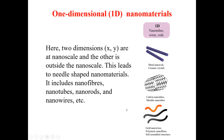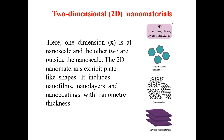Then we have two-dimensional nanomaterials. For two-dimensional nanomaterials, one dimension — let's say X — lies at the nanoscale, while the other two dimensions, Y and Z, are outside the nanoscale. This follows the same definitional approach used for zero-dimensional and one-dimensional materials.